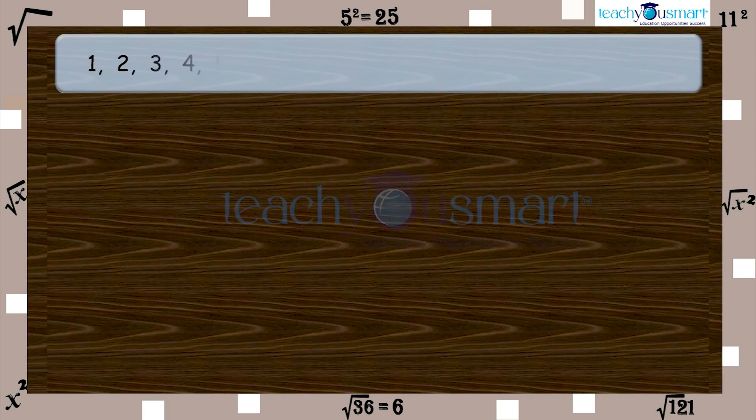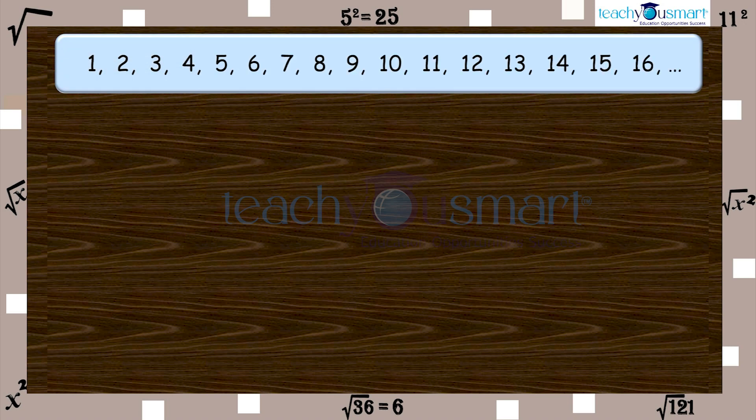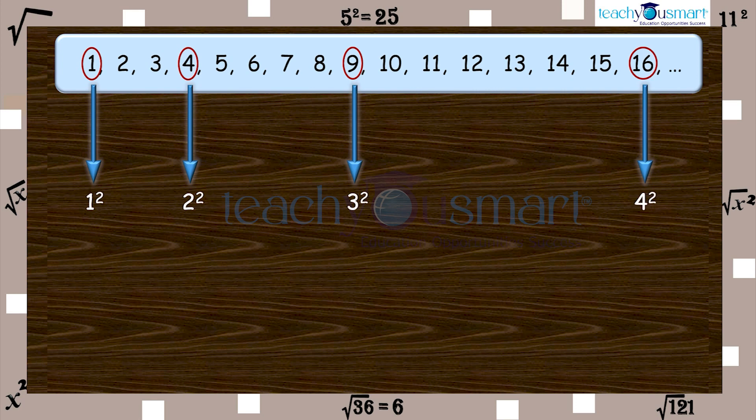Let's check another interesting pattern. There are non-perfect square numbers between two consecutive square numbers. There are two numbers between one square and two square, four numbers between two square and three square, and six numbers between three square and four square.